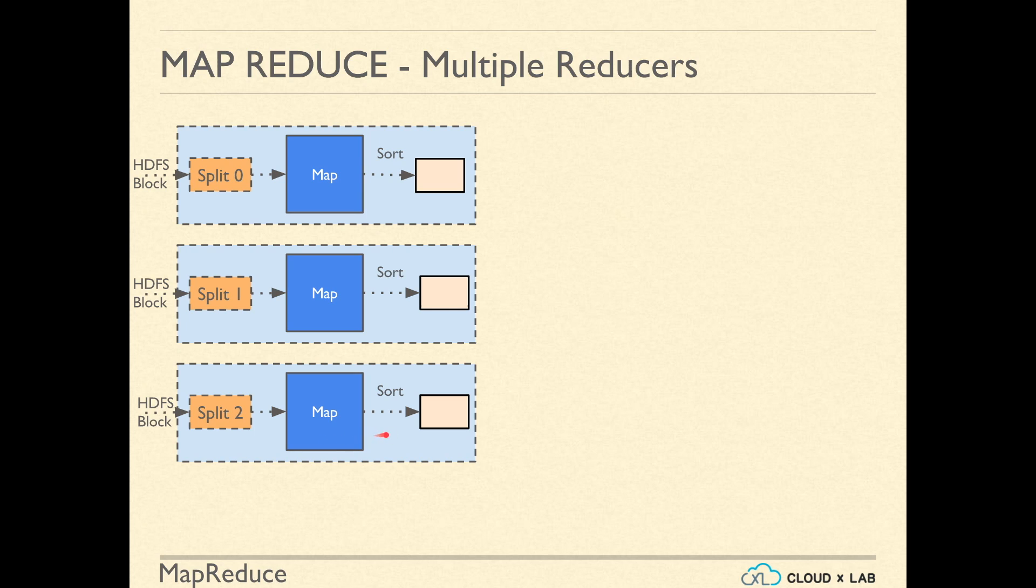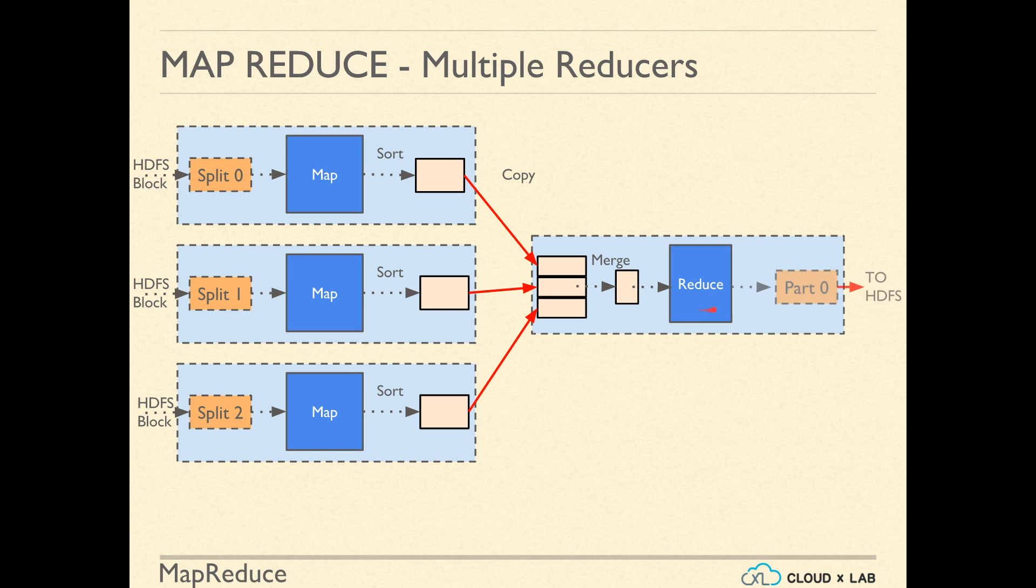And these key-value pairs are sorted and then grouped together by Hadoop based on the key. All of the values for each key are aggregated using your reducer logic.